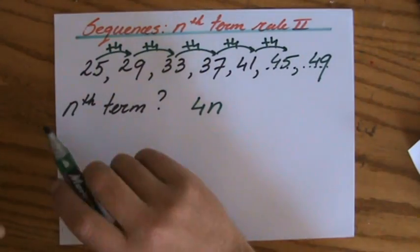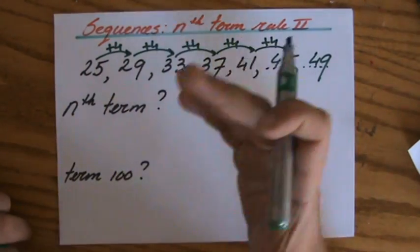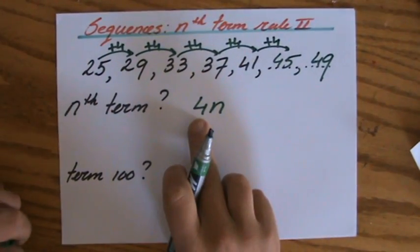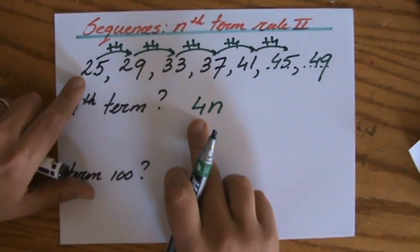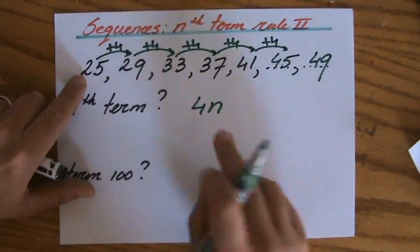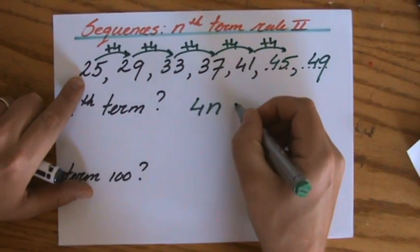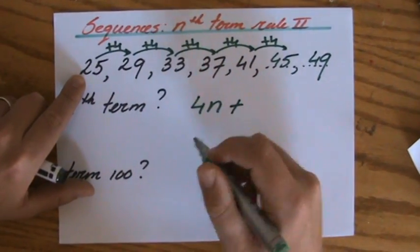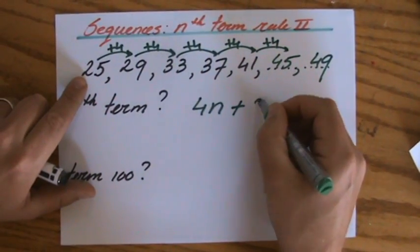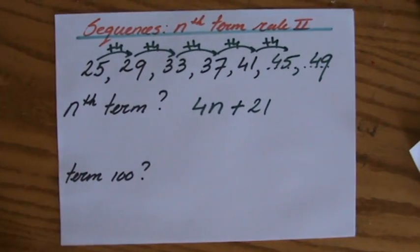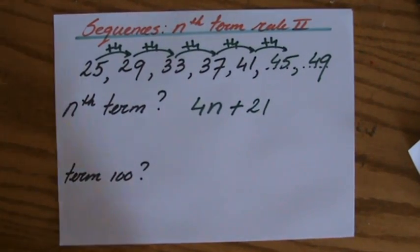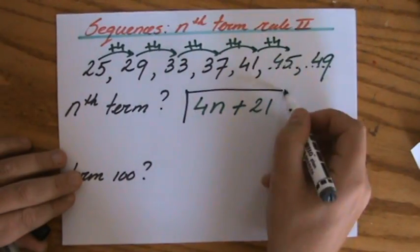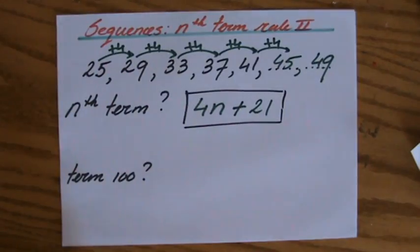I ask myself: how much do I have to add or subtract to go from 4 to 25? Well, I have to add, because 25 is bigger. How much do I have to add? I have to add 21. And now I'm finished — that is my nth term rule: 4n plus 21.